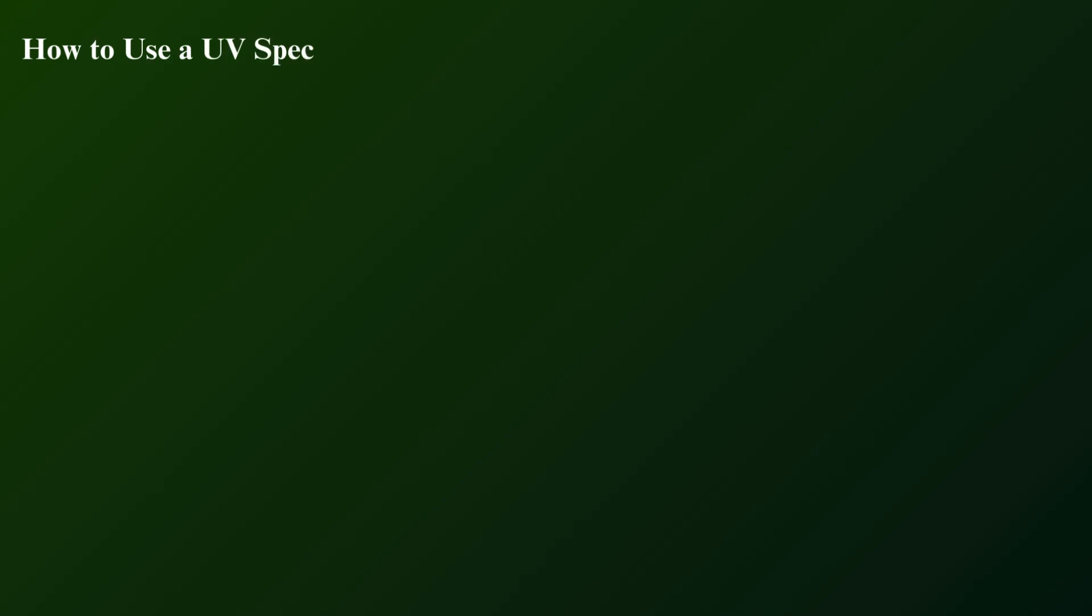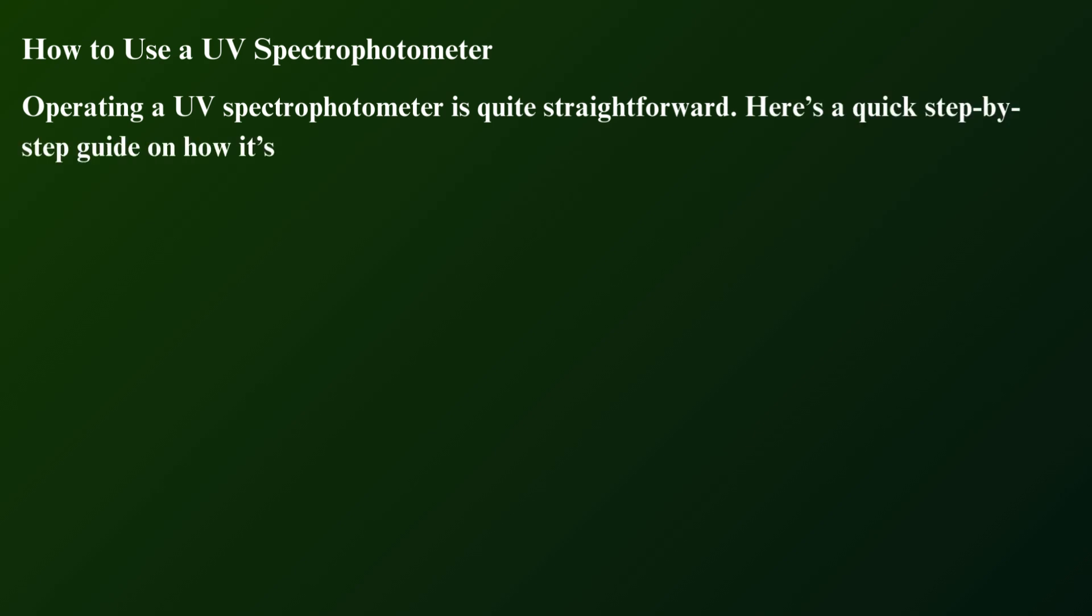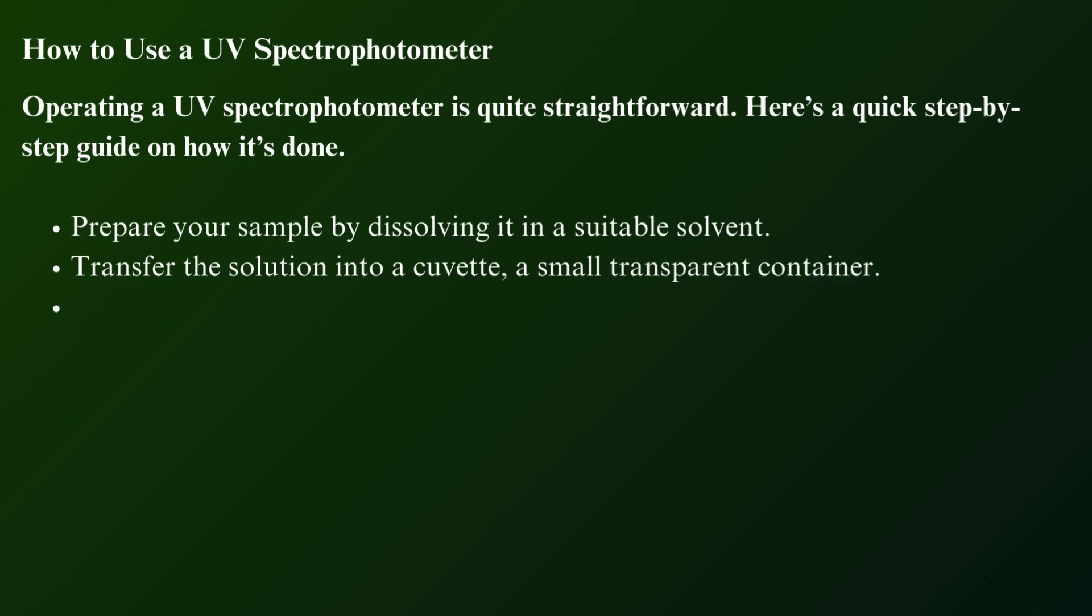How to use a UV spectrophotometer? Operating a UV spectrophotometer is quite straightforward. Here's a quick step-by-step guide on how it's done. Prepare your sample by dissolving it in a suitable solvent. Transfer the solution into a cuvette, a small transparent container.